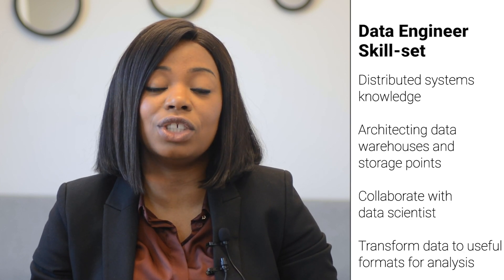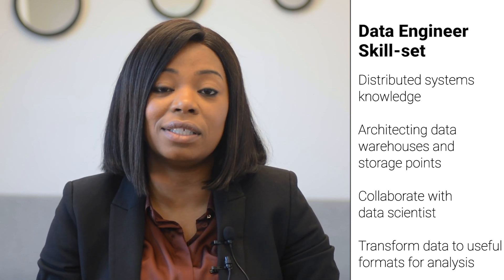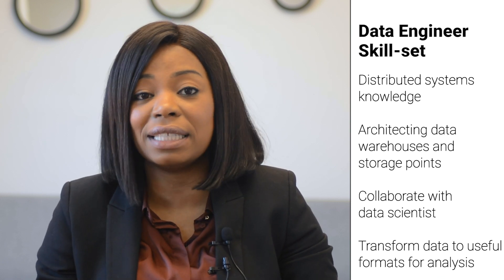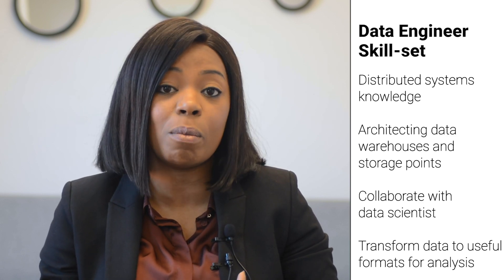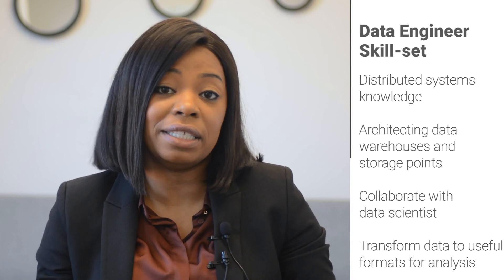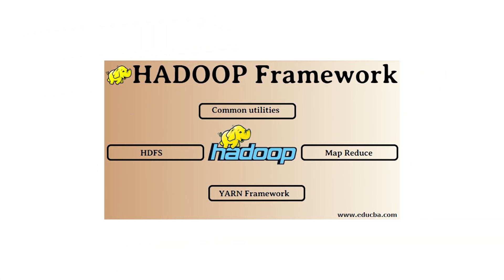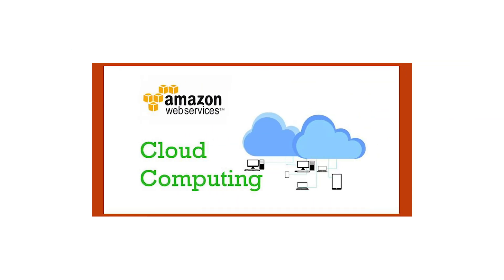The typical skills for a data engineer cover areas such as distributed systems knowledge, architecting data warehouses and storage points, and working collaboratively with data scientists — being able to pull different types and sources of data and transform it into a form useful for analysis. The types of technologies they're typically working with include big data frameworks such as Hadoop, which is more Java-based, Spark, which uses more of a Scala code line, and cloud computing platforms like AWS.